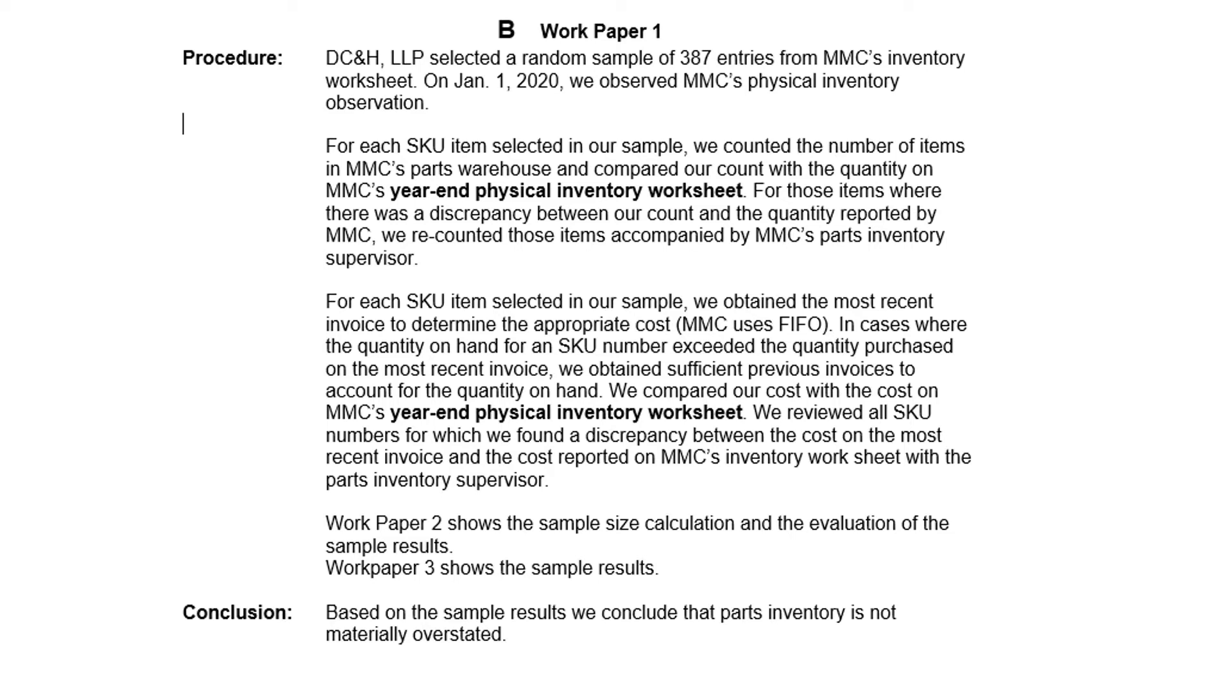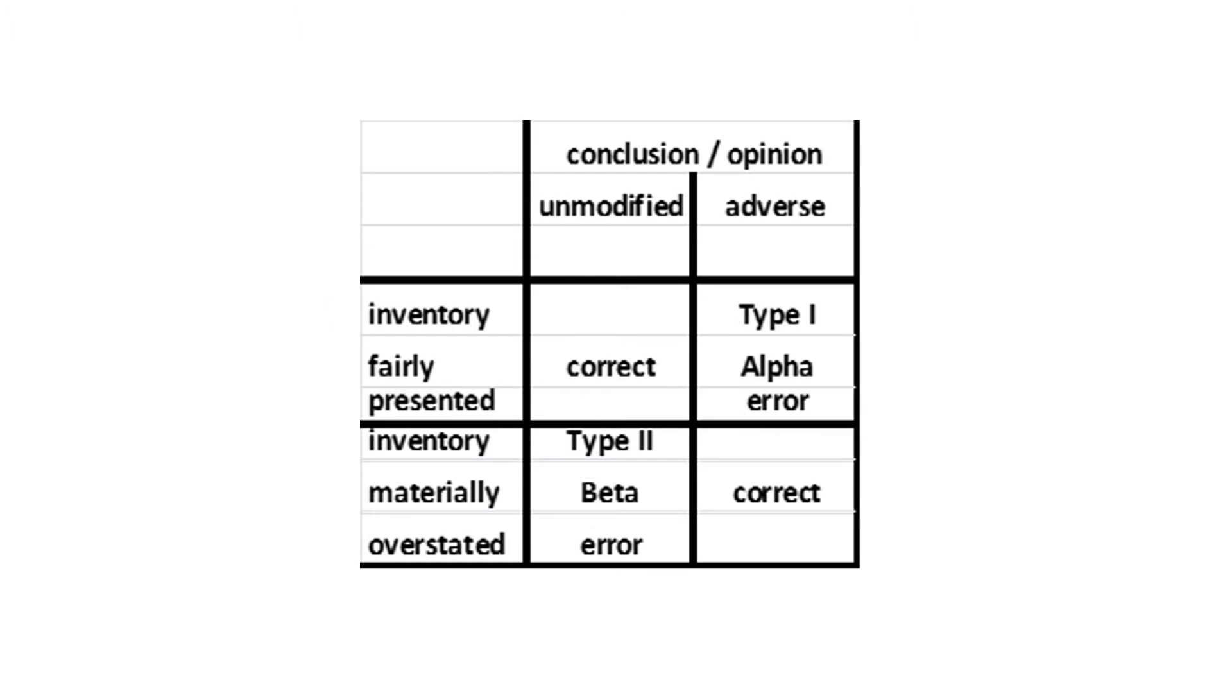At the bottom, notice that we form a conclusion. That's essential. We have to form a conclusion, obtain sufficient appropriate evidence in order to reach a reasonable conclusion on which the opinion will be based. Okay, there are four things that can happen when we're auditing financial statements or an account. So we're auditing inventory. Two of those are good. Inventory is fairly presented and we issue an unmodified opinion. That's good. That makes us happy. Inventory is materially overstated and we issue an adverse opinion. That's correct.